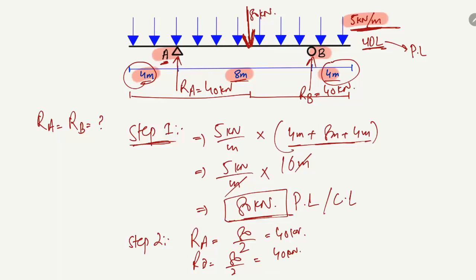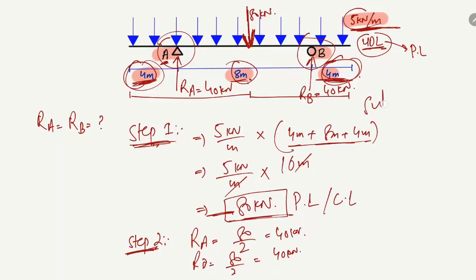This simple two-step method works when you have a symmetrical overhanging beam — meaning the two overhanging portions have the same length and there is a uniformly distributed load acting over the entire beam length. In Step 1, multiply the UDL by the total beam length to get the concentrated load. In Step 2, divide by 2 to get the support reaction at each support. Hope you guys understand!